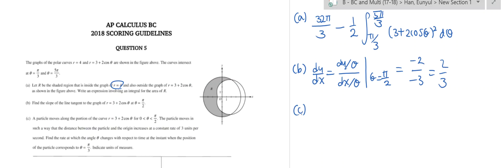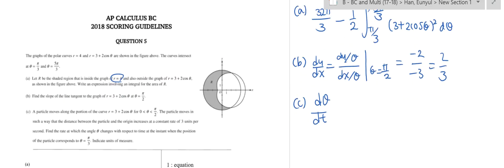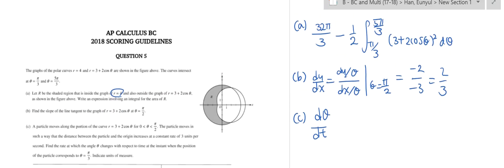Part C. For Part C, we have to find the rate at which the angle theta changes with respect to time, which means we're getting d theta/dt. Before jumping into getting d theta/dt, we need to use the given information.